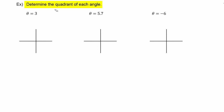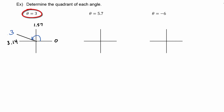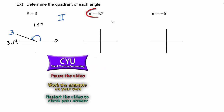In the next example, we have to determine the quadrant of each angle. We're given theta equals 3. Labeling our axes: 0, 1.57, 3.14 — since our angle is 3, it falls between 1.57 and 3.14, placing it in quadrant 2. Pause the video and try the next two problems, then restart when you're ready to check your answers.